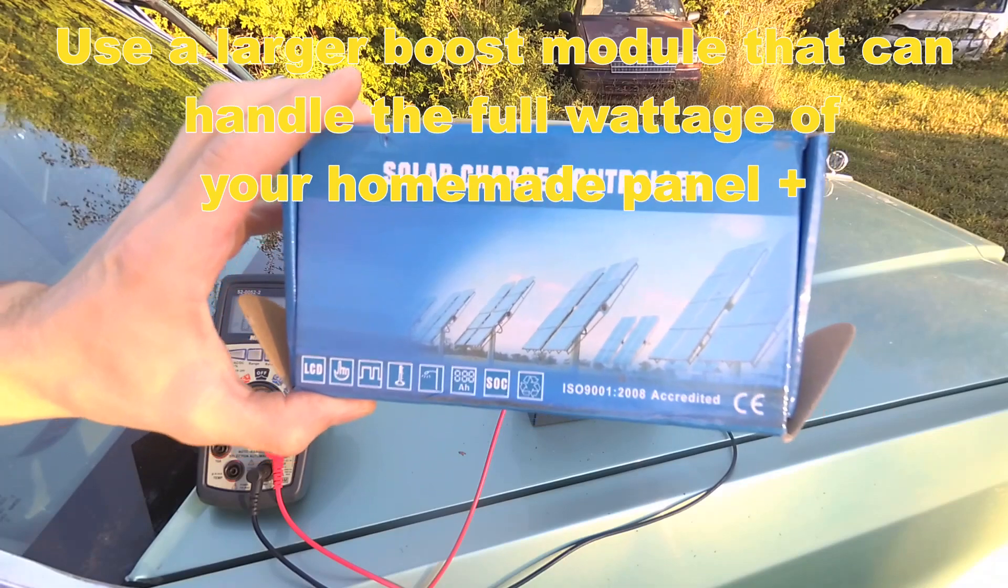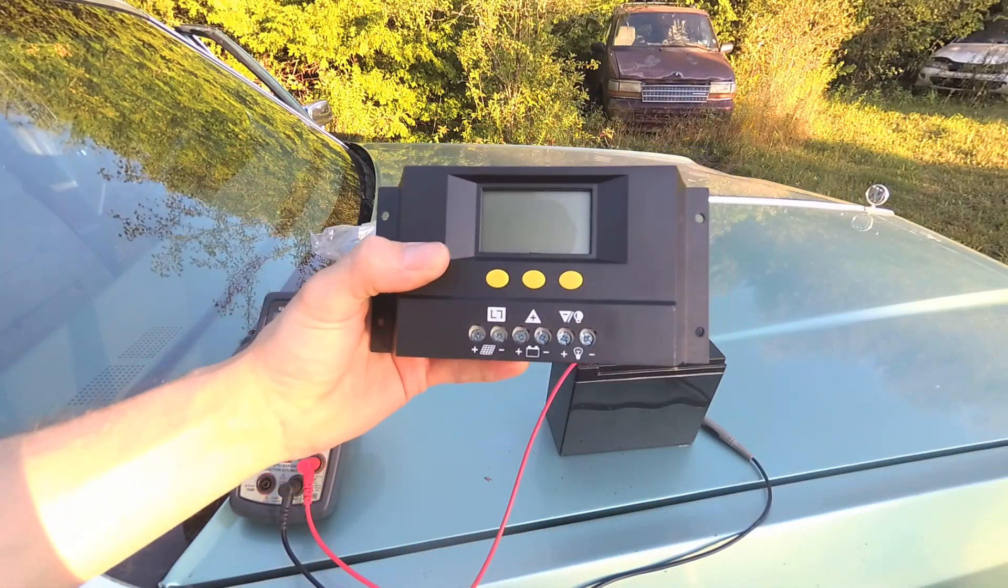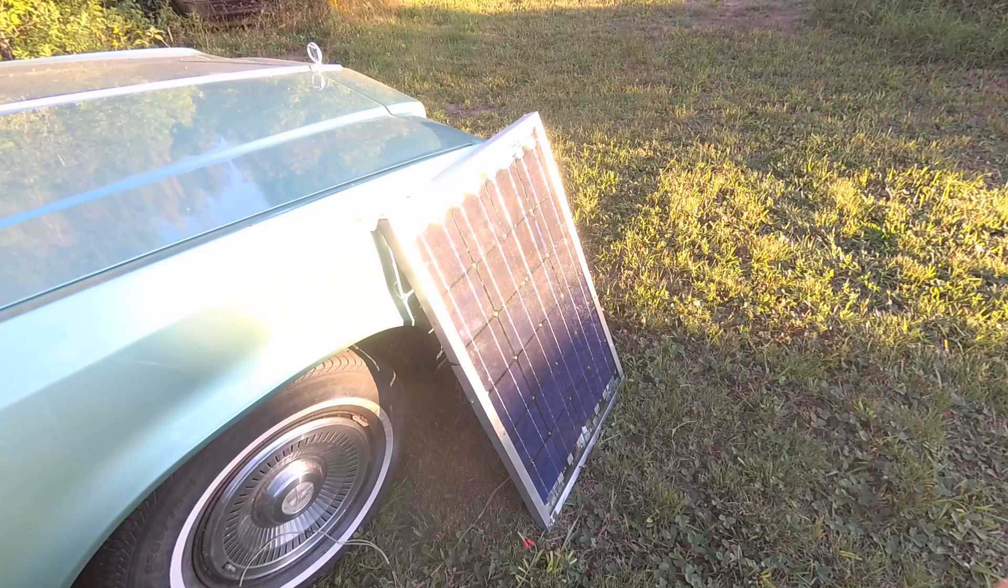But we can connect our solar panel to a charge controller like this one here. So this charge controller here is a little big for that panel. For this panel here, you don't really need anything more than a 10 amp controller. Even a 7 amp controller would work or less.